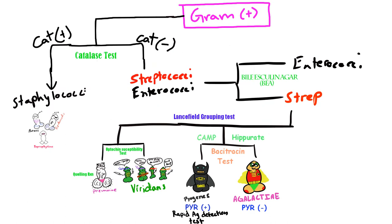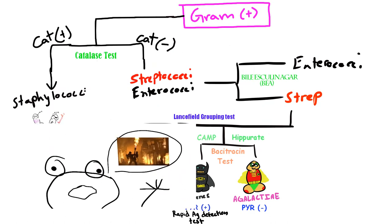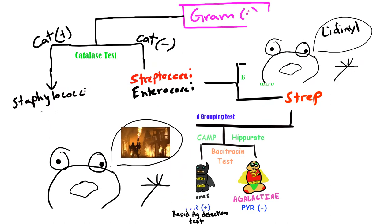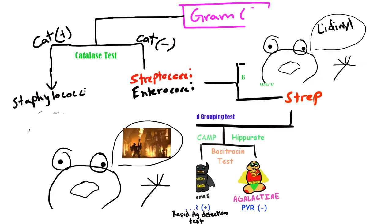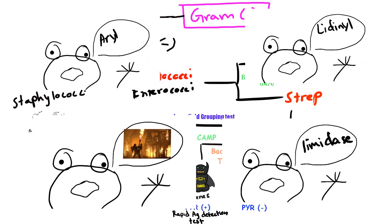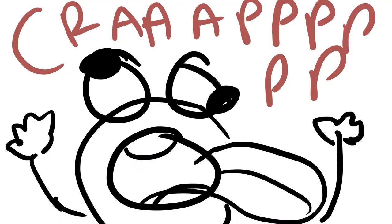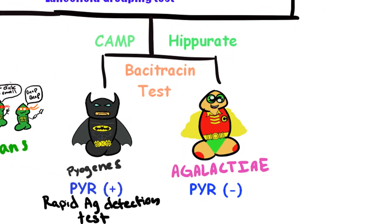Another test is the PYR test, which stands for pyrolydenylarylamidase. It's a qualitative test that can quickly identify GAS and certain enterococci organisms.